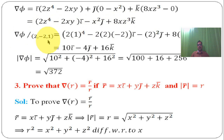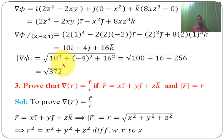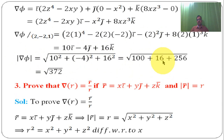Evaluating grad φ at (2, −2, 1) by substituting x=2, y=−2, z=1: grad φ = 10ī − 4j̄ + 16k̄. Therefore |grad φ| = √(10² + 4² + 16²) = √(100 + 16 + 256) = √372.